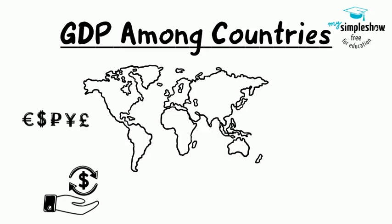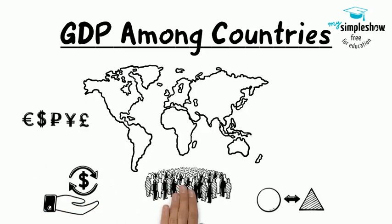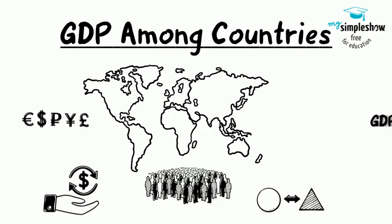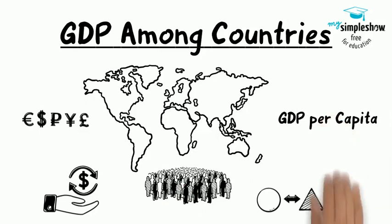Once we express GDPs in a common currency, we can compare each country's GDP per capita by dividing GDP by population. Countries with large populations often have large GDPs, but GDP alone can be a misleading indicator of a nation's wealth. A better measure is GDP per capita.